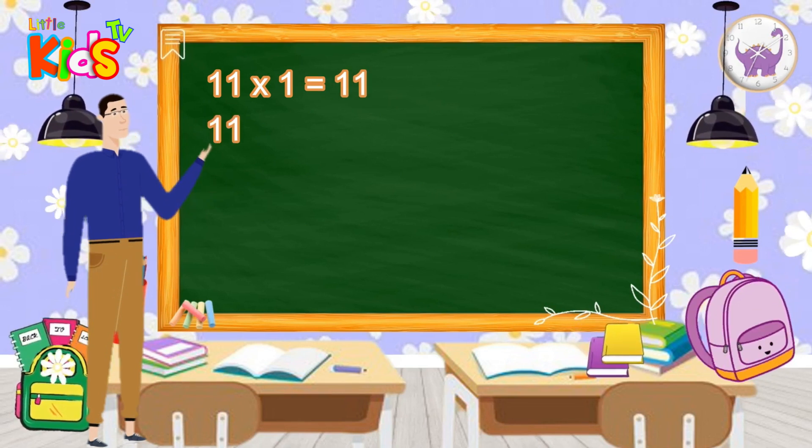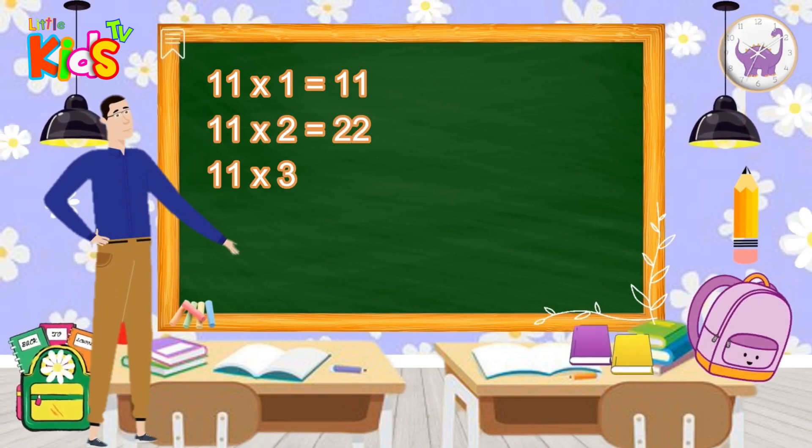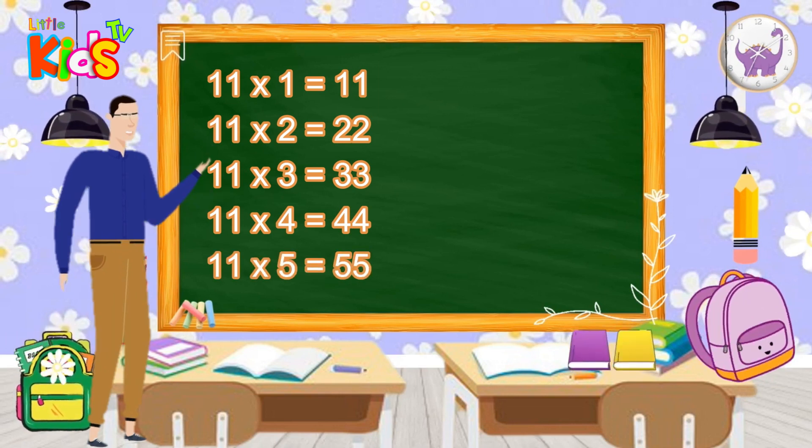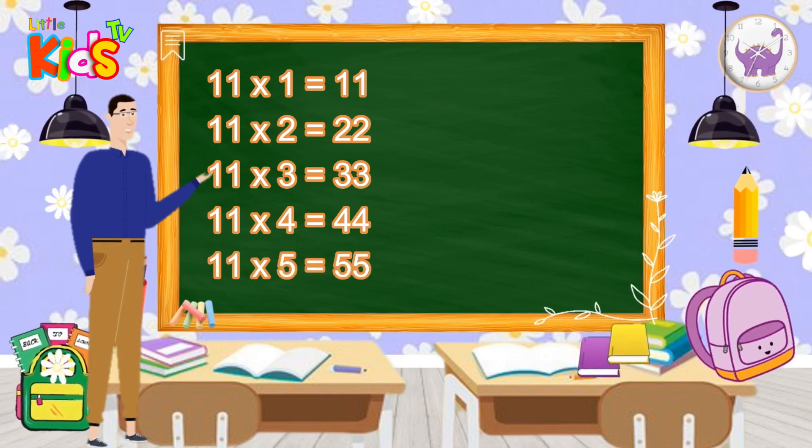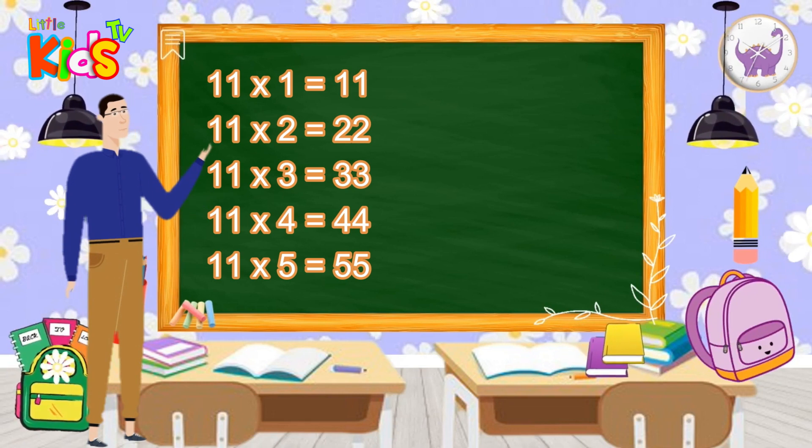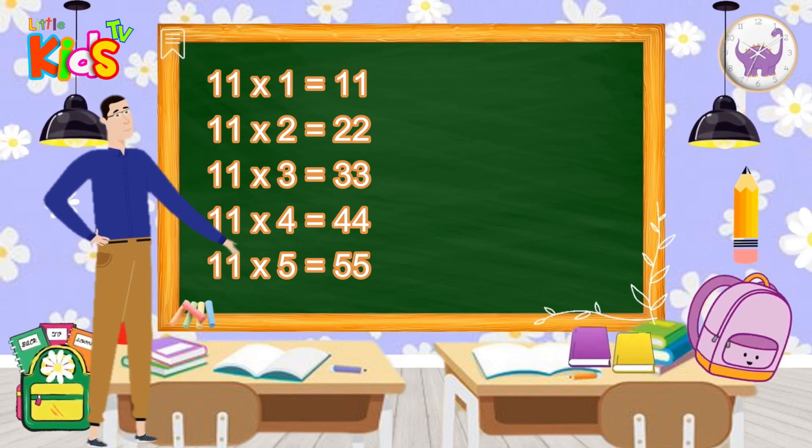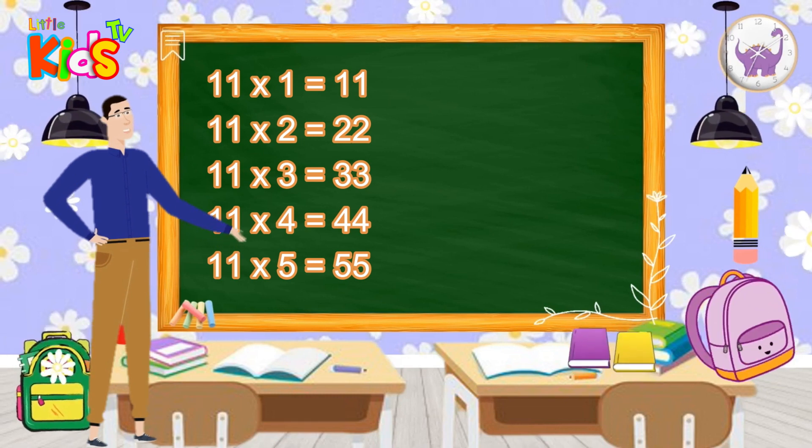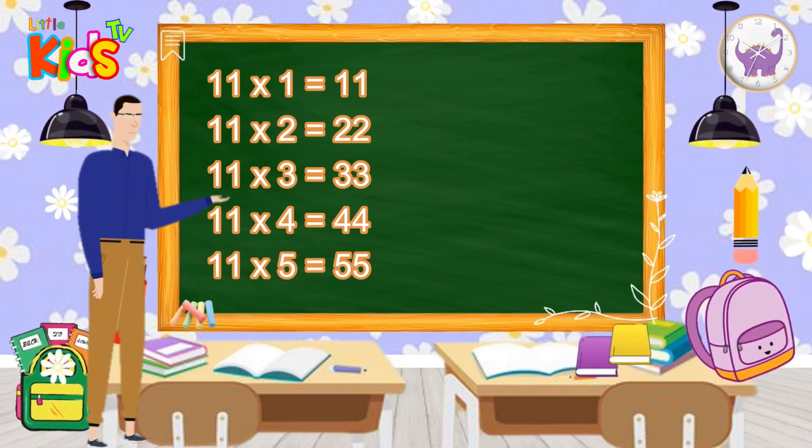11 1s are 11. 11 2s are 22. 11 3s are 33. 11 4s are 44. 11 5s are 55.